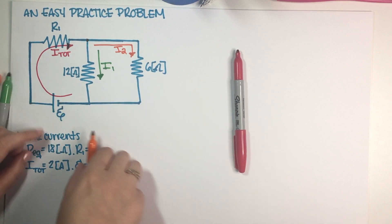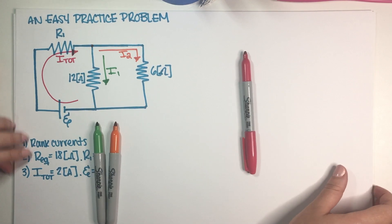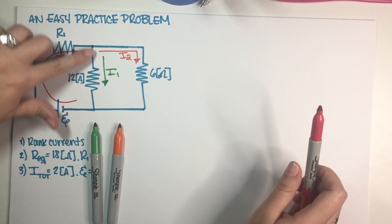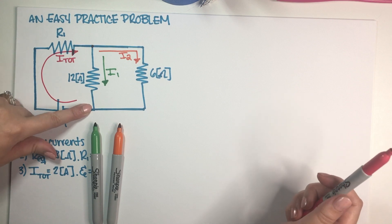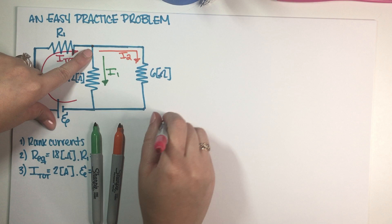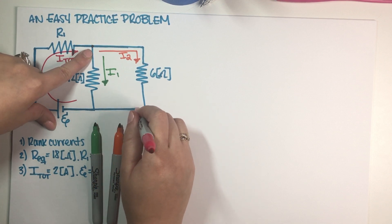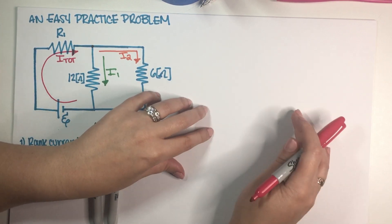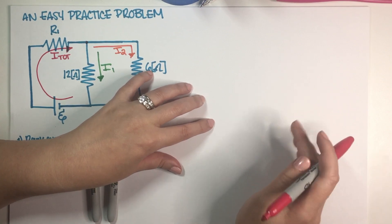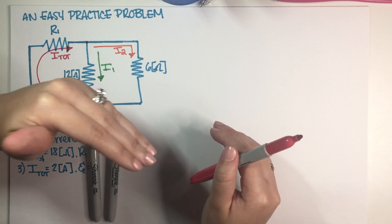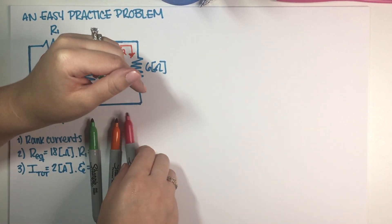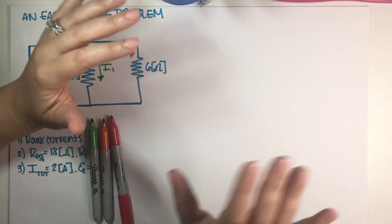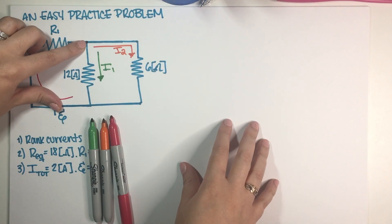Just like with fluids, we can postulate a continuity equation every time we get into a junction in a circuit. For every junction, we look at how many currents are going into the junction and how many are going out. Because we need to conserve charge, whatever amount of current is going into the junction must equal what's going out — it's our 'what goes in must go out' rule applied at the junctions.